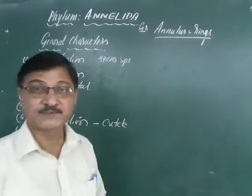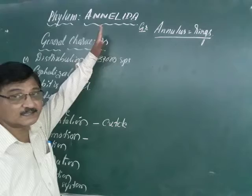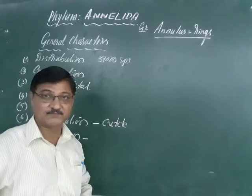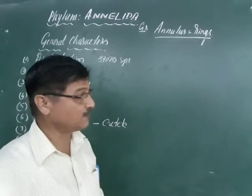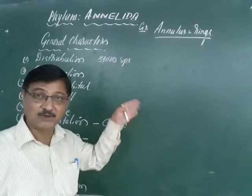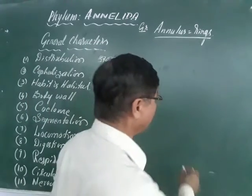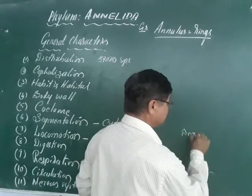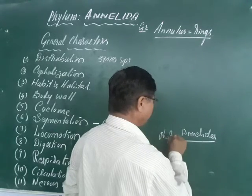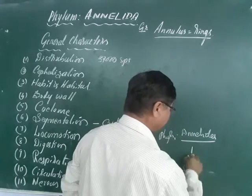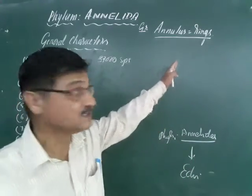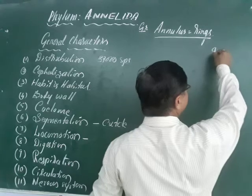Dear friends, let us go to study the general characters of phylum one by one. I will take, in non-chordates, from Annelida onwards. The phyla covered are Annelida up to Echinodermata. Total how many phyla? Nine phyla, in which one is Protozoa, second Porifera, third Coelentrata.